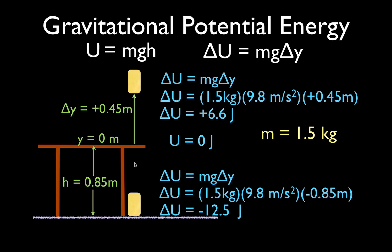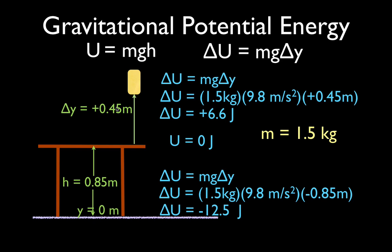A third case: we take the object from the floor and move it up to the elevated location. We calculate the change in potential energy, now referencing from the floor as our zero surface. The mass is still 1.5 kilograms, acceleration due to gravity is still 9.8, and the change in Y is 0.85 plus 0.45, which is 1.3 meters. Multiplying all those together, the change in potential energy from the ground surface is 19.1 joules.